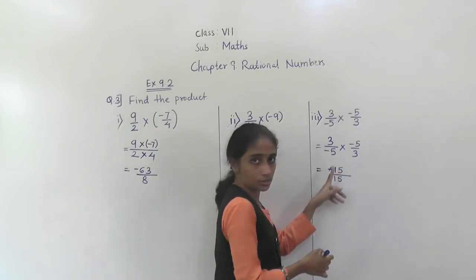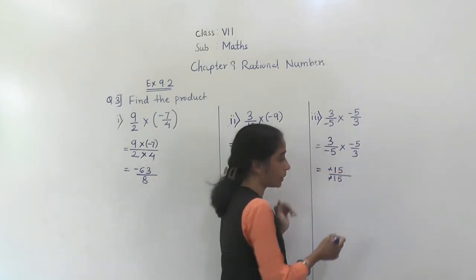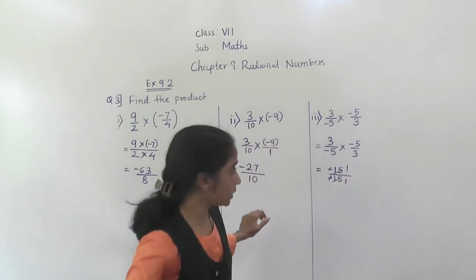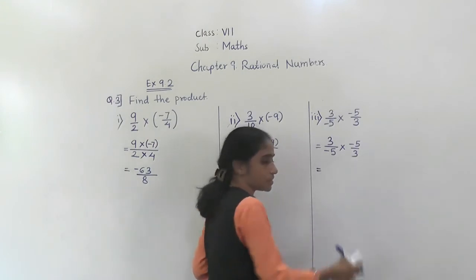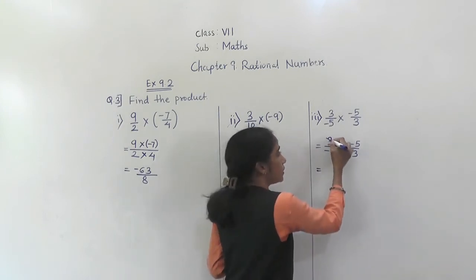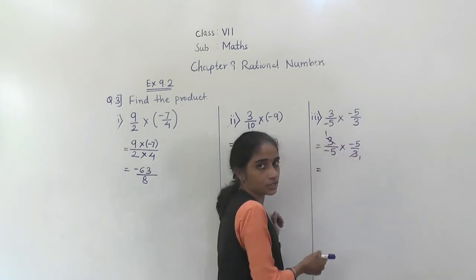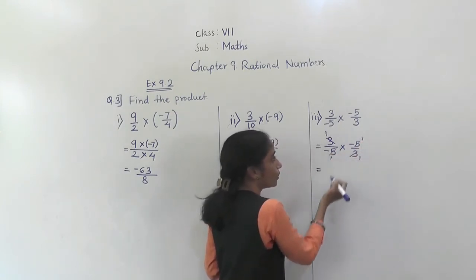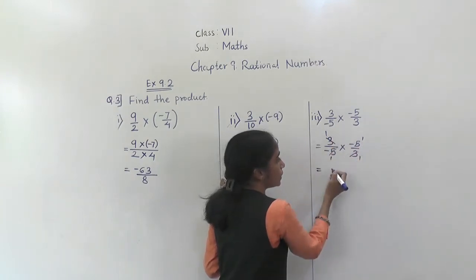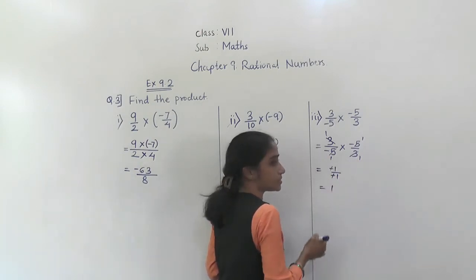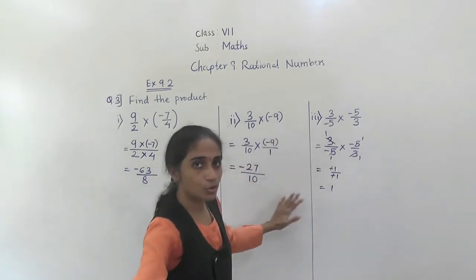Minus minus — they individually get cancelled. Minus minus becomes plus. 15 ones are 15. There is one more method I will explain. Here only we can do the lowest term. 3 ones are 3, and 5 ones are 5. So 1 into minus 1 is minus 1, and minus 1 into 1 is minus 1. These get cancelled, so the answer is 1. Both ways you can solve.